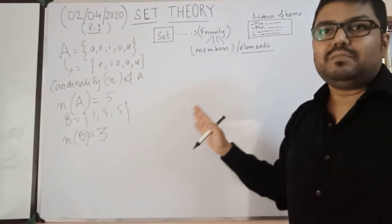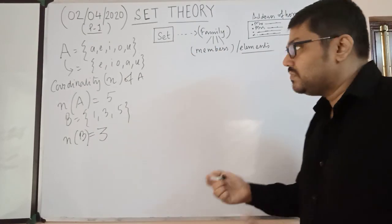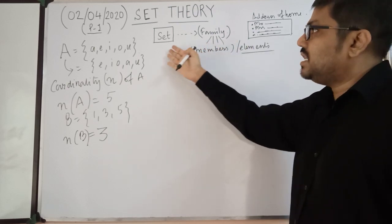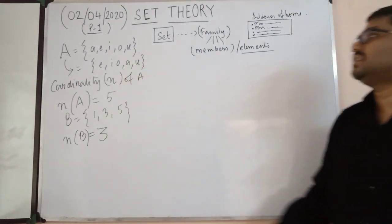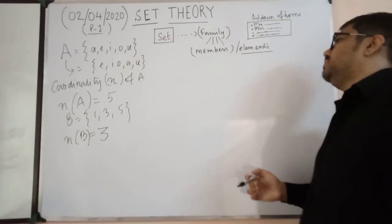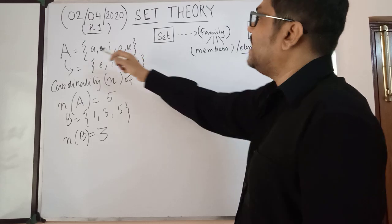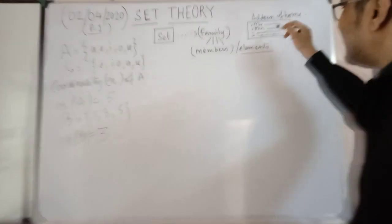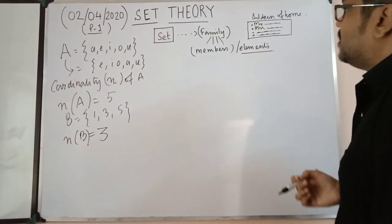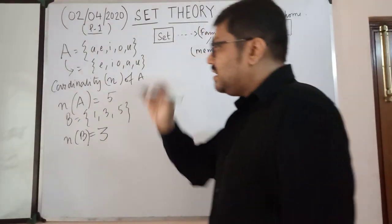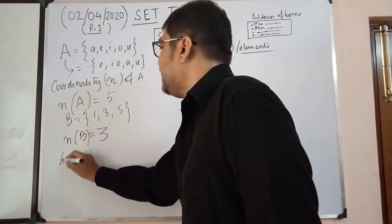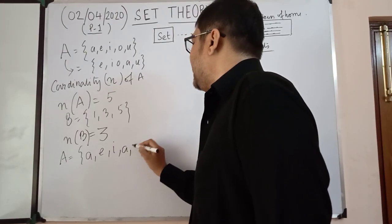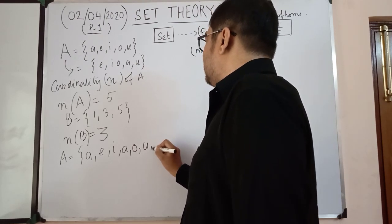To summarize what we've discussed: a set and a family are the same thing — set is just the mathematical name. You represent it by a capital letter and write the elements within curly brackets separated by commas. Elements can be written in any order. Now one more important thing: say I write A = {a, e, i, a, o, u, e} — repeating some elements.